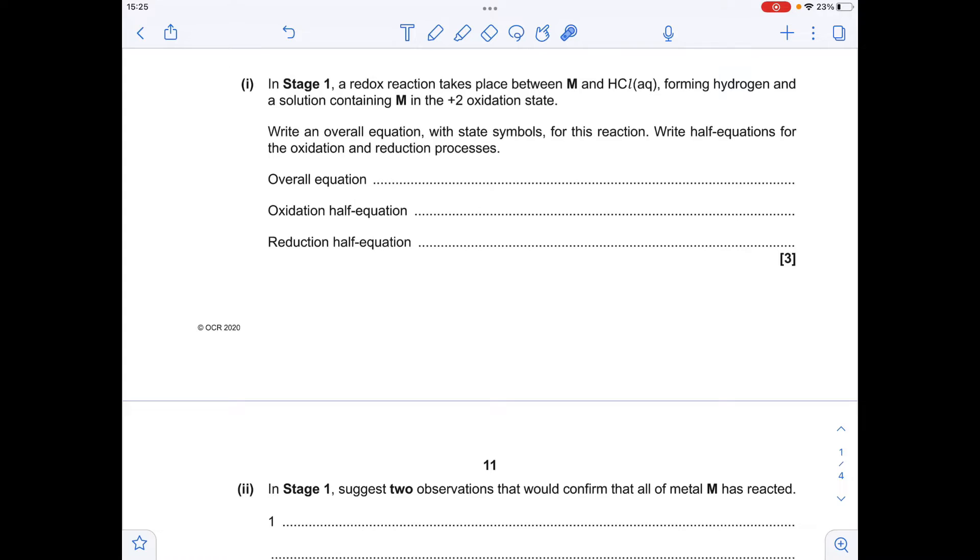The overall equation taking place in stage 1 is between a metal and an aqueous acid. We're going to form the metal salt, so it's going to be a metal chloride salt, and hydrogen. So the equation is going to look like this: metal solid plus 2 moles of HCl aqueous gives a mole of aqueous MCl2. It's MCl2 because the metal we're told is in the plus 2 oxidation state, so we need 2 Cl- ions to go with the M2+, and we make H2 gas as well.